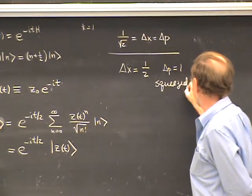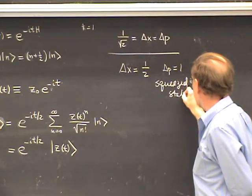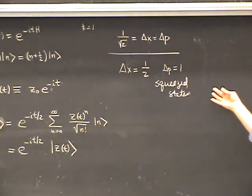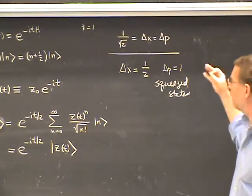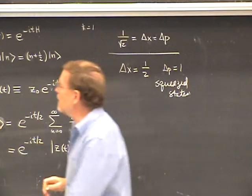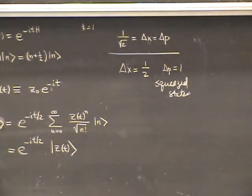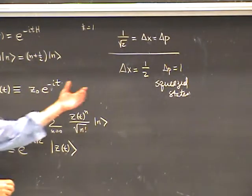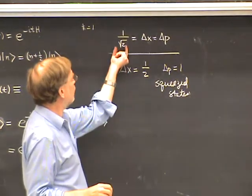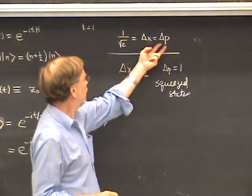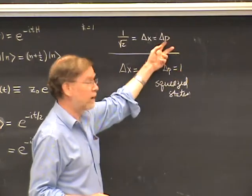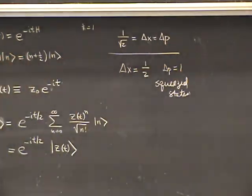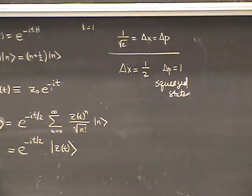This is what's sometimes called a squeezed state. Squeezed states have been of interest lately because you can actually prepare them experimentally in quantum optical systems, which requires nonlinear optical elements to create them. In phase space, you can think of this as something that's been squished: delta x has been squished by a factor of one over square root of two, but delta p has been stretched by the same factor, so the product remains invariant.